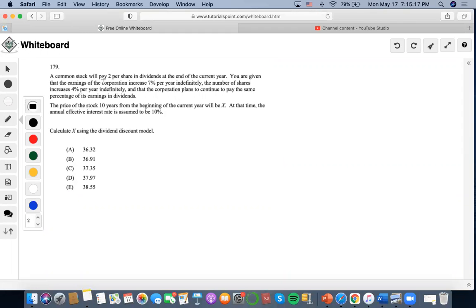Okay, so first one says that a common stock will pay $2 per share in dividends at the end of the current year. You are given that the earnings will increase 7% per year indefinitely and the number of shares increases 4% per year indefinitely.